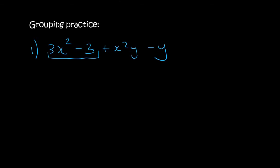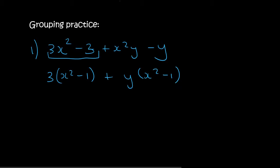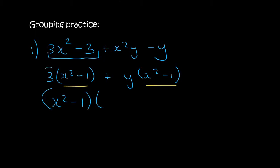In the first two terms we can take out a common factor of 3, and that would leave us with x squared minus 1. In the second two terms we can take out a y and that's going to leave us with x squared minus 1. So here we can take out a common factor of x squared minus 1 and then we'd be left with 3 plus y.